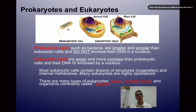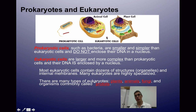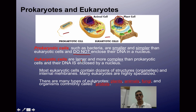For our final slide, let's distinguish between prokaryotic and eukaryotic cells. There are significant differences, the first being size — prokaryotic cells are very small, while eukaryotic cells are large by comparison. Prokaryotic cells do not enclose their DNA in a nucleus; the DNA simply floats throughout the cytoplasm. On the right-hand side you can see the nucleus in both the animal cell and the plant cell — there's no nucleus in the prokaryotic cell. Eukaryotic cells are large and complex.